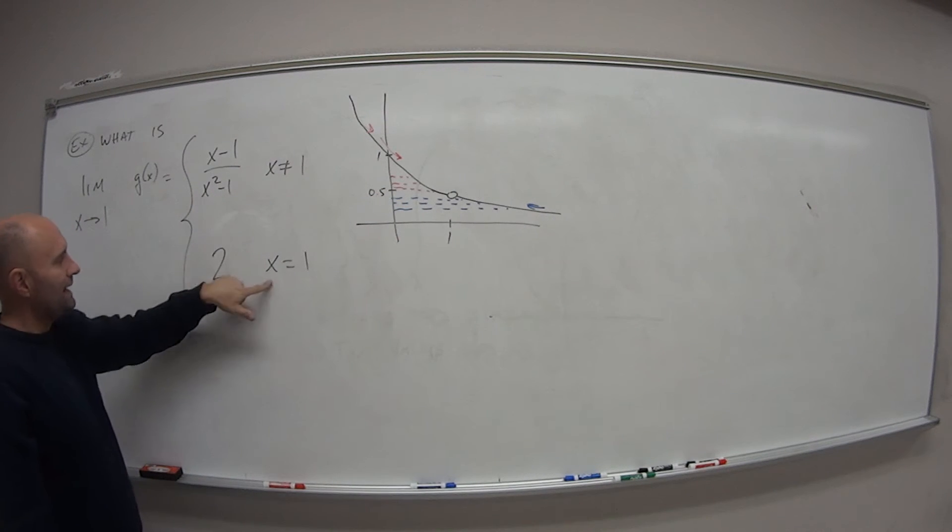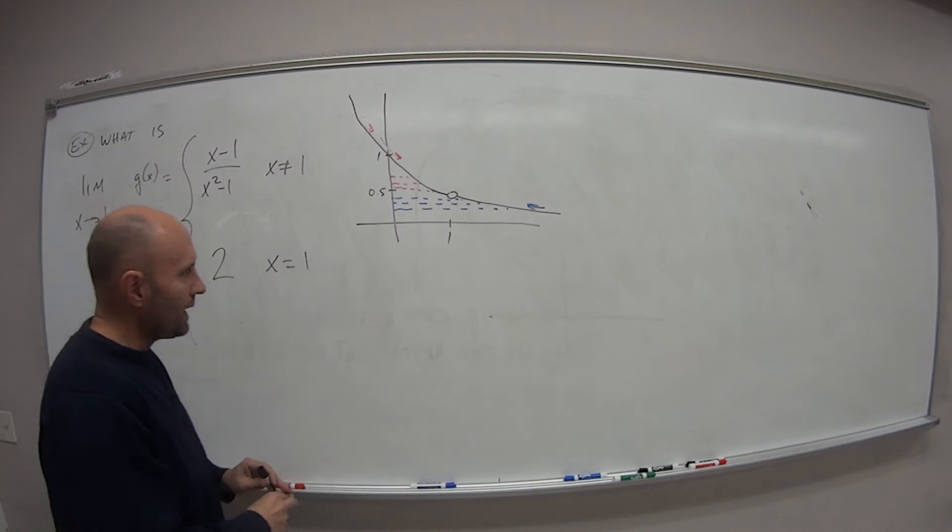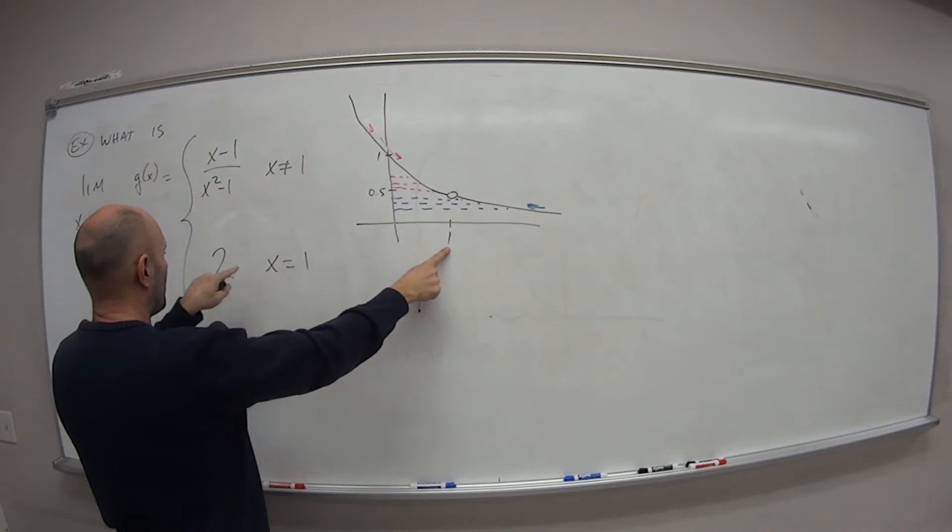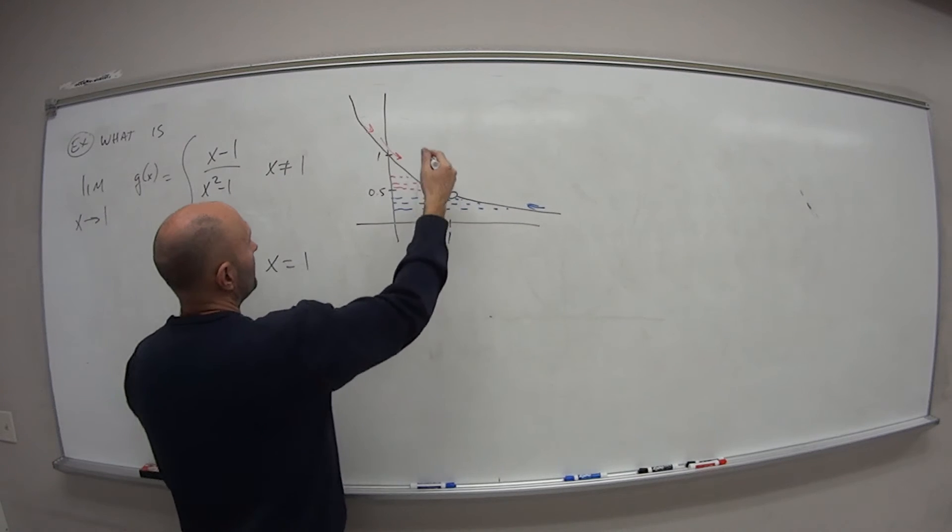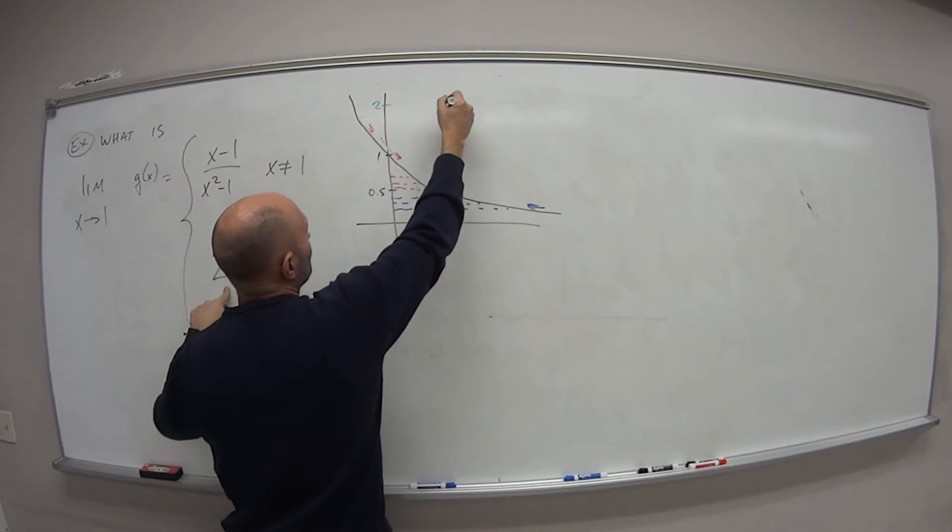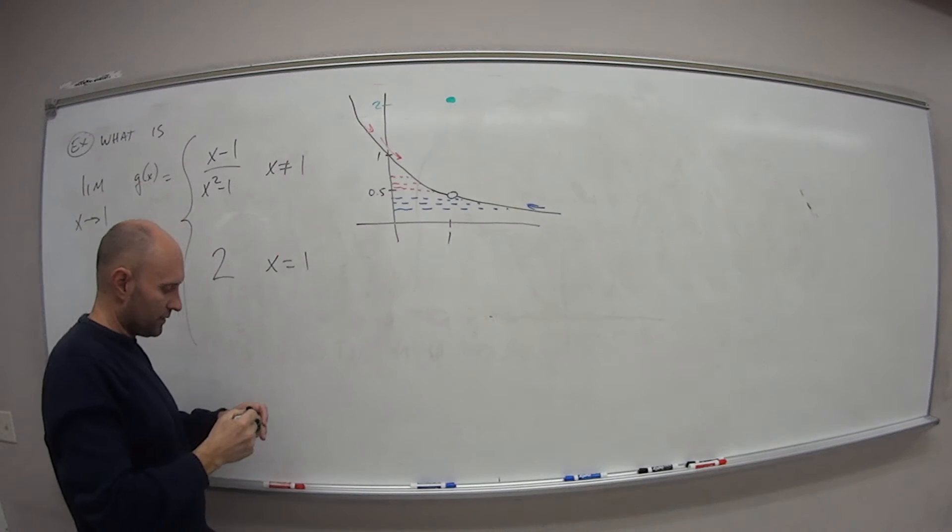This line here, this piecewise says that when x equals 1, my value of the function g of x is equal to 2. So just one dot right there.